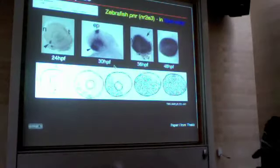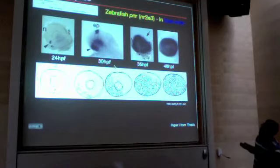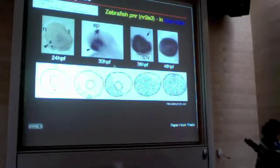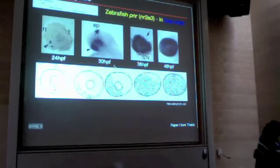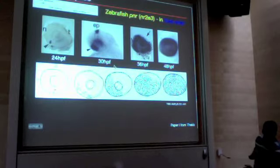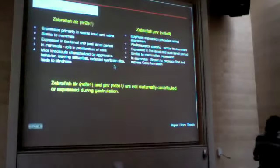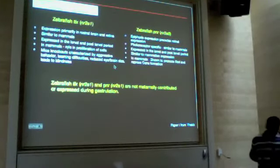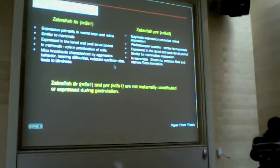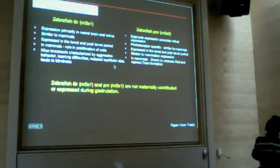PNR, on the other hand, follows the fan gradient — the neurogenic wave — in the retina, and by 48 hours PNR is expressed in the entire photoreceptor layer. Outside the retina, PNR is also expressed in the epiphysis, and epiphysis expression precedes retinal expression. Both TLX and PNR show very high expression similarity to that of mammals, both in the brain and in the retina.